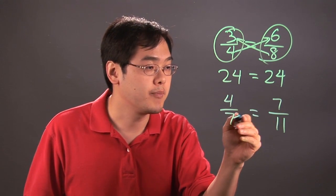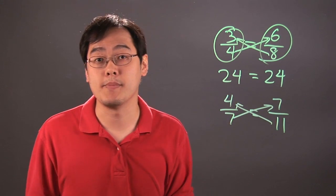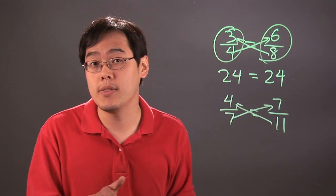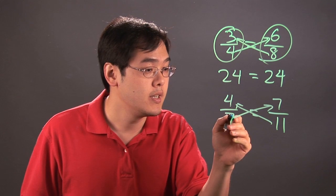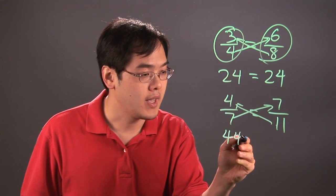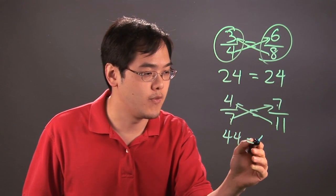Same kind of idea. Cross multiply and then see if the numbers match. If they do, they're equivalent. If not, then they're not equivalent. So 11 times 4 is going to give you 44, and then 7 times 7 is going to give you 49.